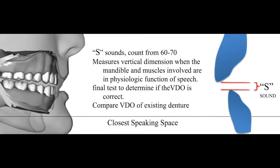To confirm that we have proper freeway space, we check the closest speaking space. When the patient speaks an 'S' sound, typically counting from 60 to 70, it measures the vertical dimension when the mandible and muscles involved are in physiologic function of speech. This allows us to verify whether our vertical dimension of occlusion is properly established — when the patient speaks 'S' sounds, the teeth should not be in contact.